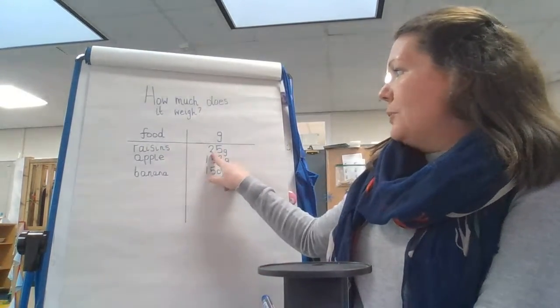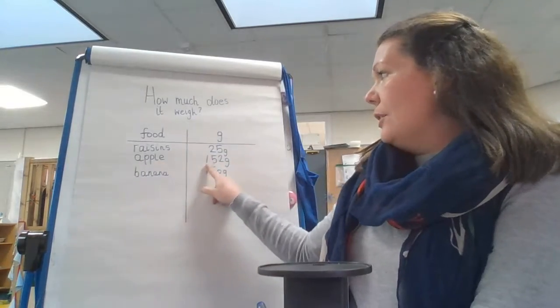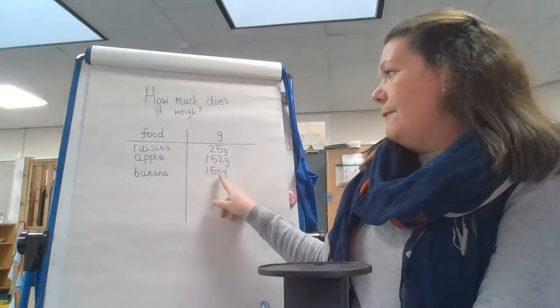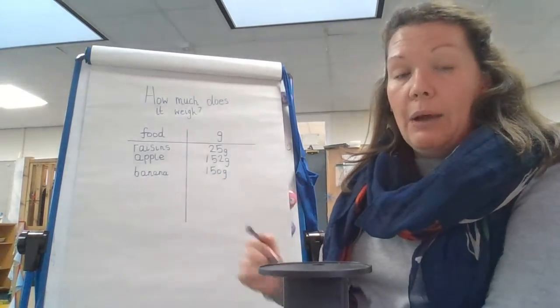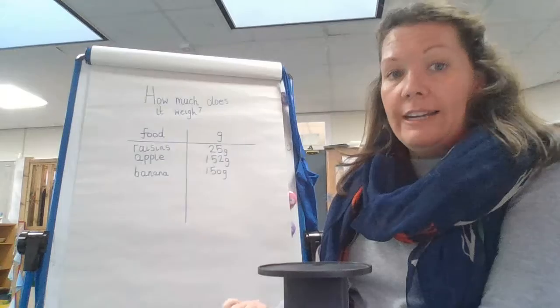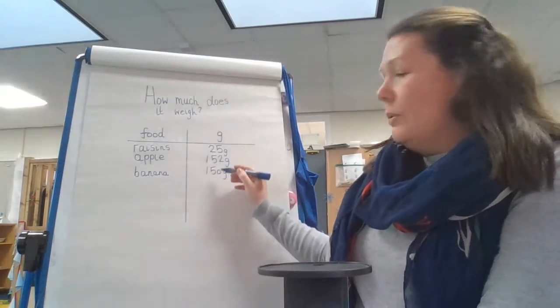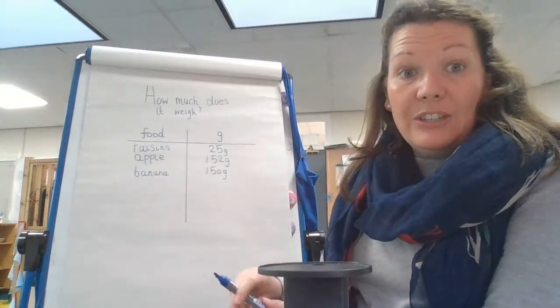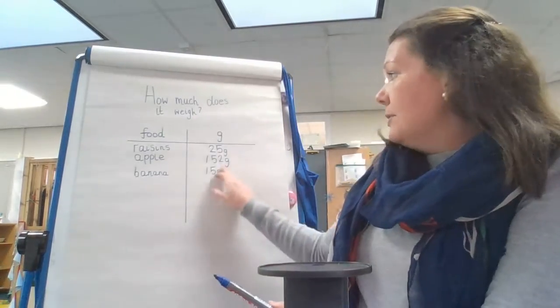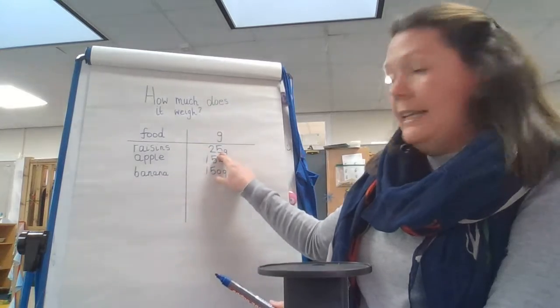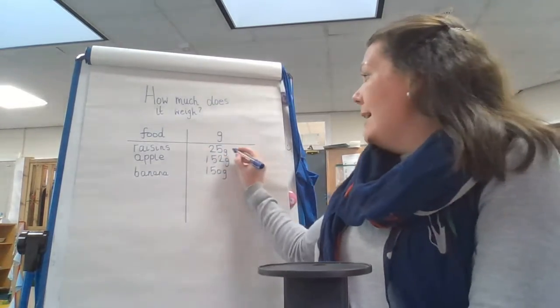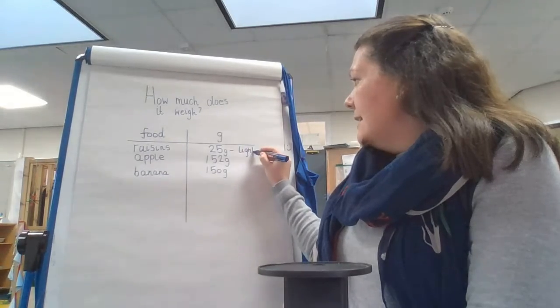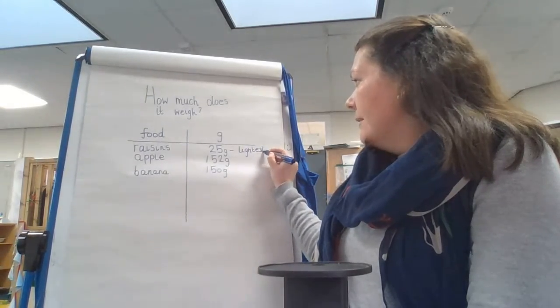So my raisins weighed 25 grams. My apple weighed 152 grams, and my banana weighed 150 grams. So looking at that, I need to find out which was my lightest item. What we're looking for when we're looking at the numbers is the smallest number means it's your lightest. So my smallest number on here is 25. My raisins are the lightest.